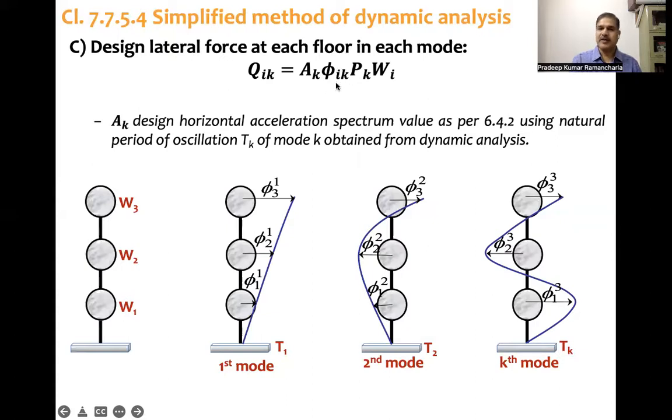You can see first mode, second mode, third mode. This is for getting the mode shape coefficient φik, where i is the subscript for level and k is the superscript for mode number. Let's look at finding design lateral force at each floor in each mode.